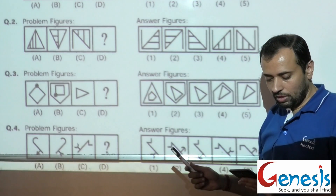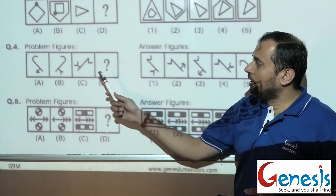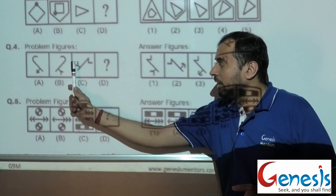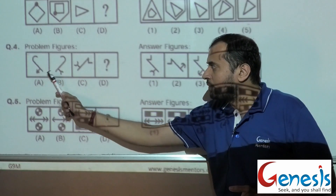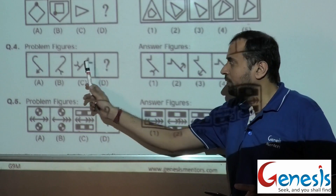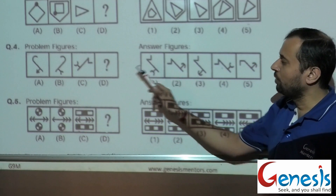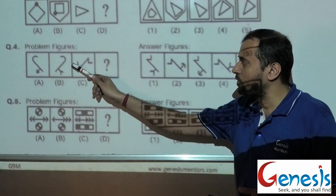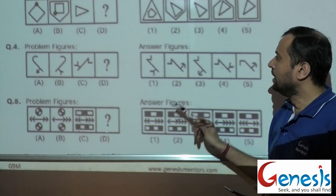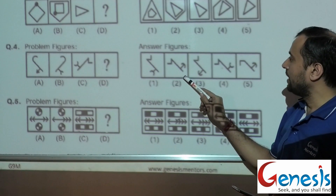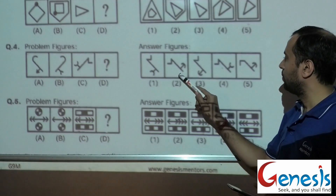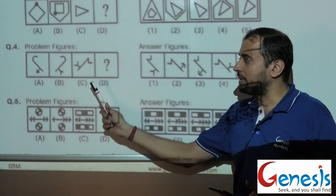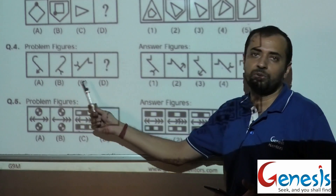Moving on to the fourth problem: a mirror image is being taken, but there is a catch. After taking the mirror image, the arrow pointing outwards will now point inwards. So the same way, first a mirror image of this would be taken, and then this semicircle would also be inverted — when it was open outside, it would now be open inside. Taking the exact mirror image, the correct answer out of these two is definitely figure number 2. Figure number 2 replaced in D maintains the same relation from C to D as from A to B.